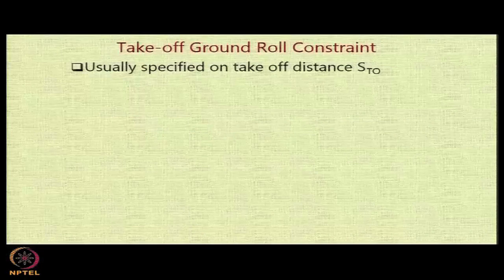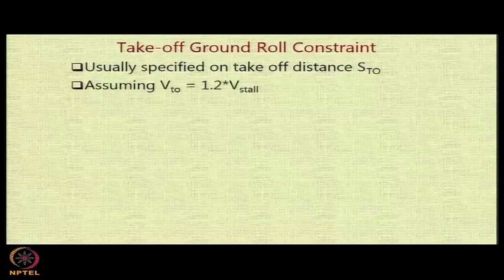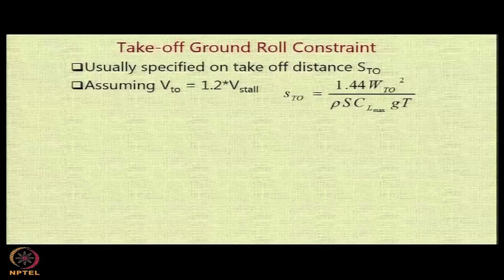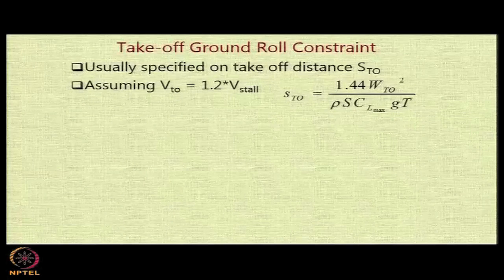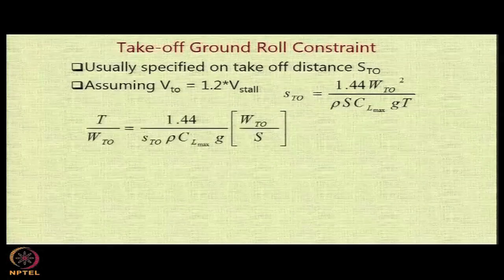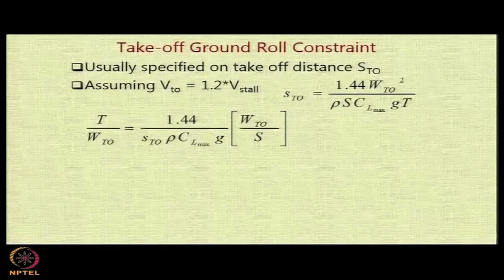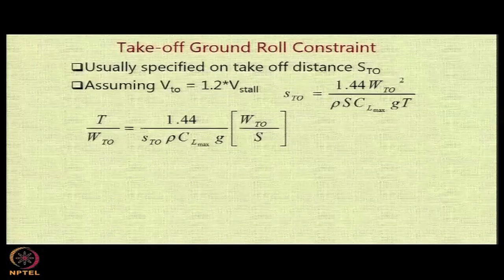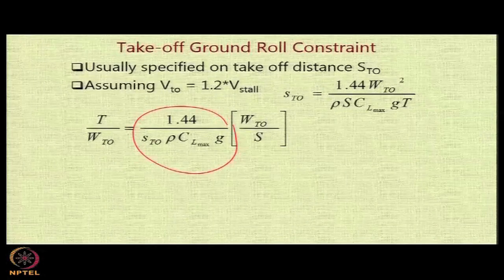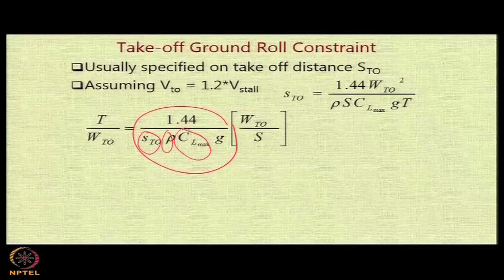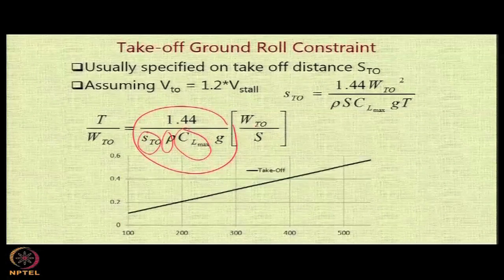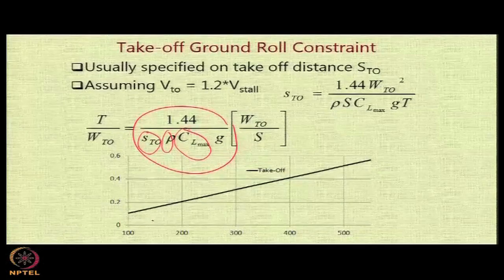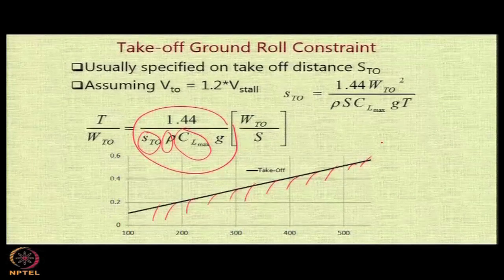Similarly, let us take a constraint on takeoff ground roll. Usually specified in terms of takeoff distance STO. If you assume the V takeoff to be 1.2 times V stall, which is the regulatory requirement, then STO is equal to, because VTO is 1.2 times V stall, you have a factor of 1.2 squared or 1.44. Therefore, the T by WTO will be coming as a straight expression. For a given STO, for a given altitude, for a given CL max in takeoff, you should be able to get a direct link between T by W and W by S. This is going to be a linear line, and the area below this line is going to be infeasible because that will not meet the specified takeoff value.